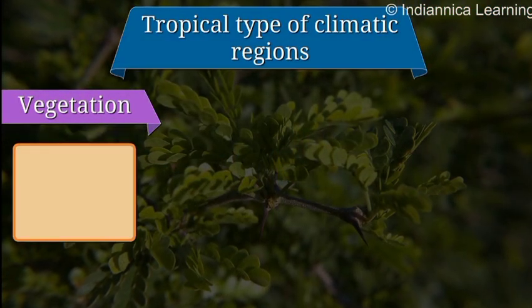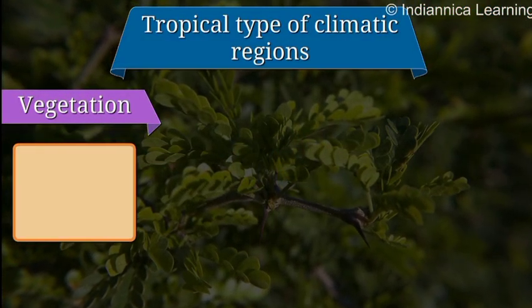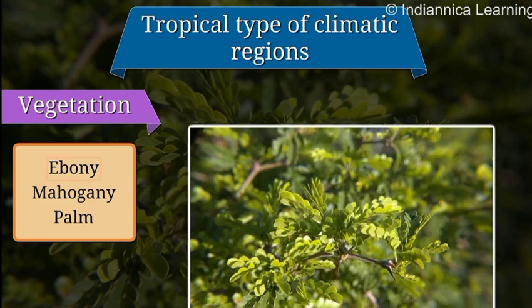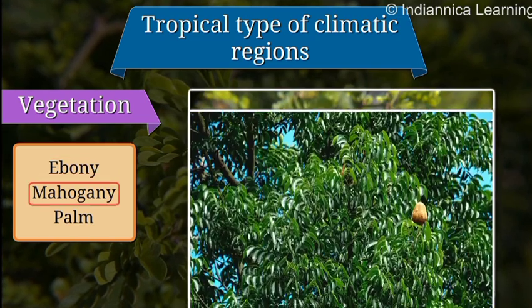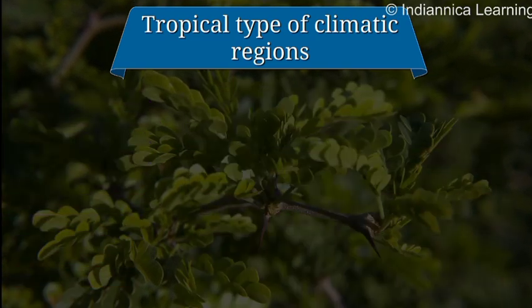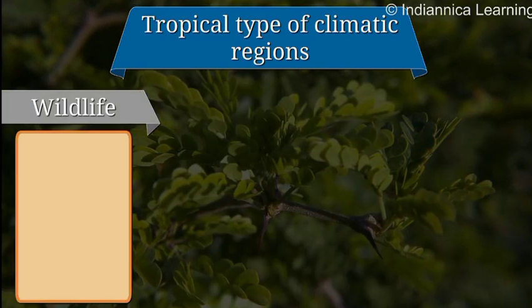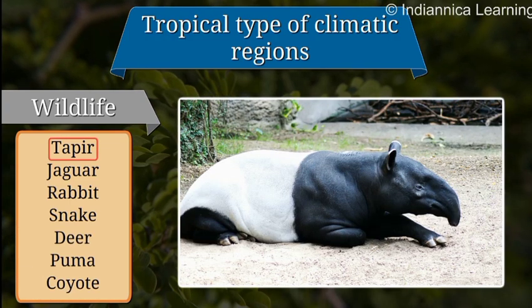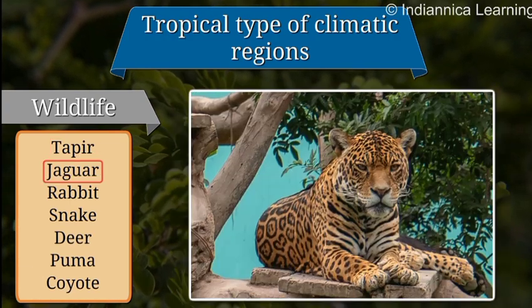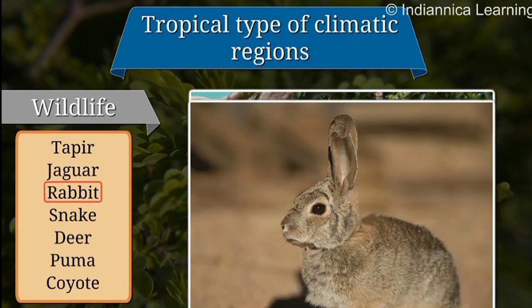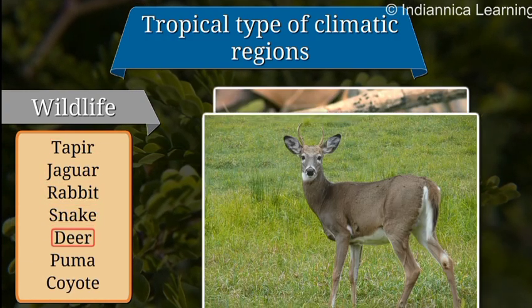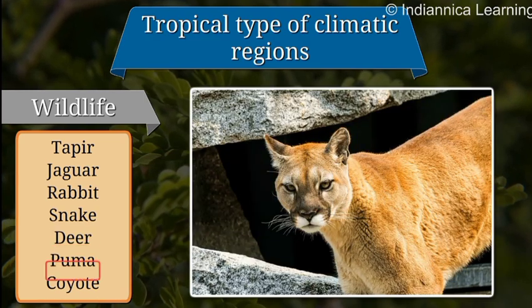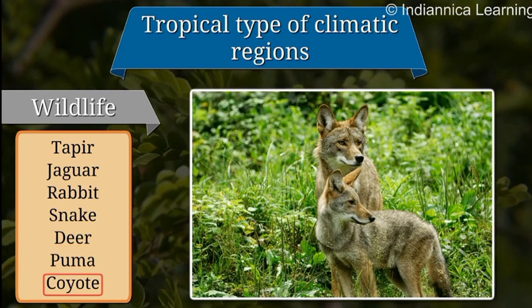Tropical type: The regions with the tropical type of climate consist of evergreen trees like ebony, mahogany, and palm. The wildlife here consists of the tapir, jaguar, rabbit, snake, deer, puma, and coyote.